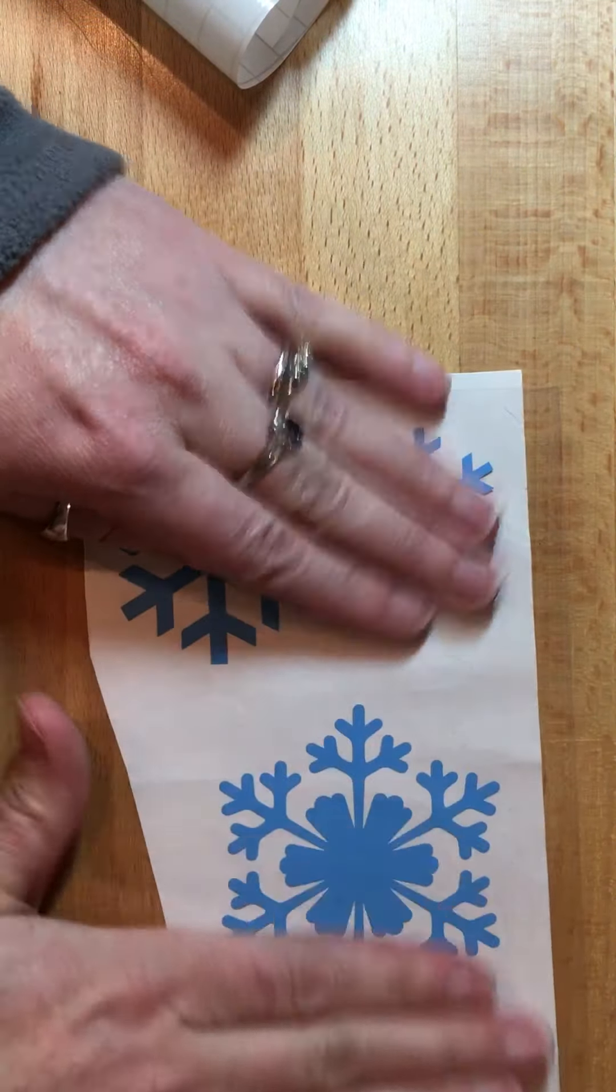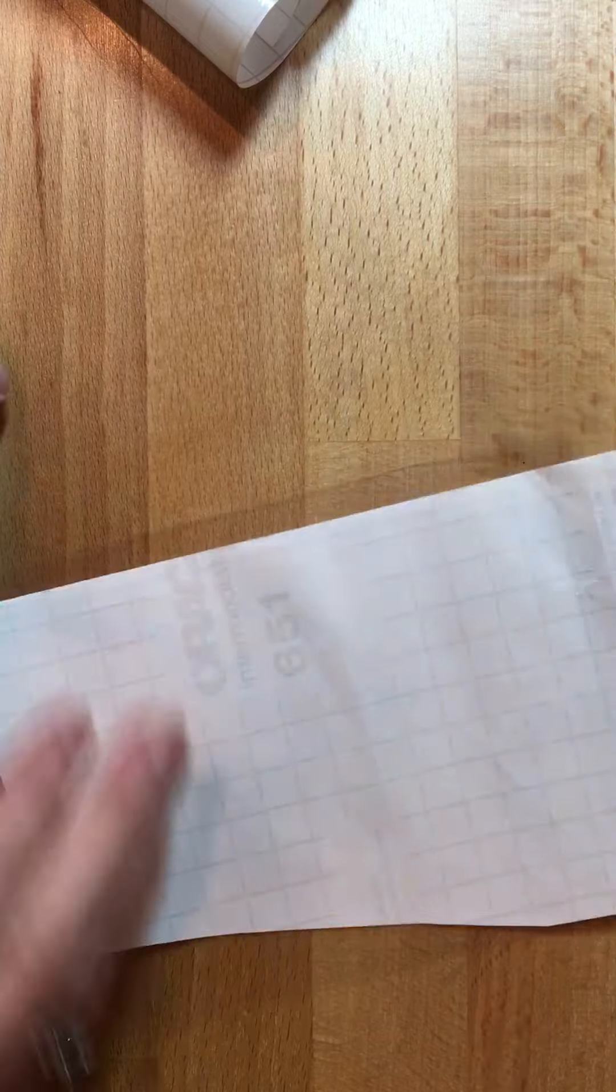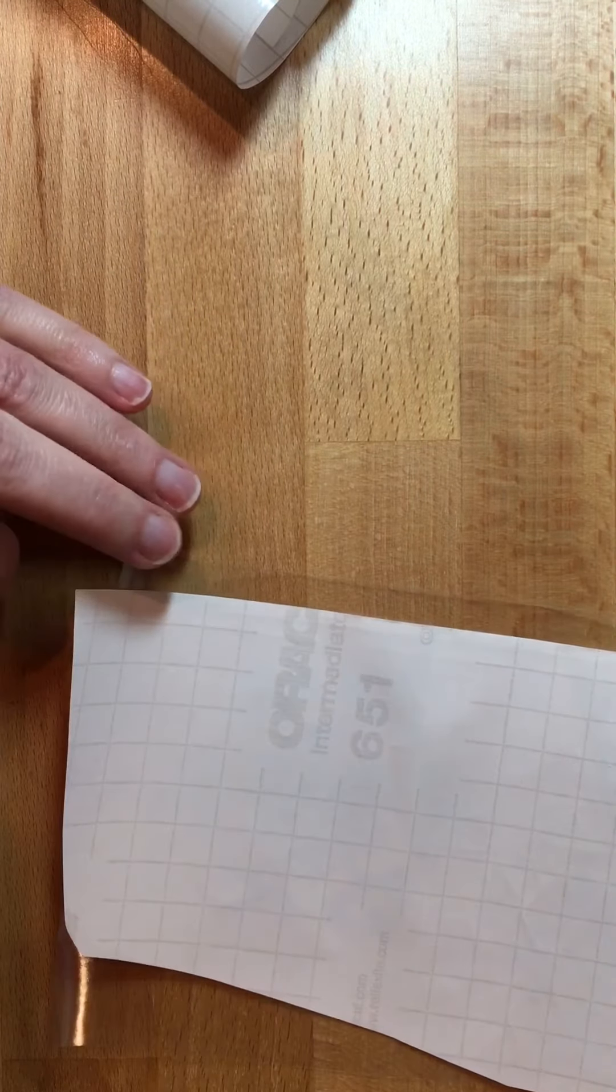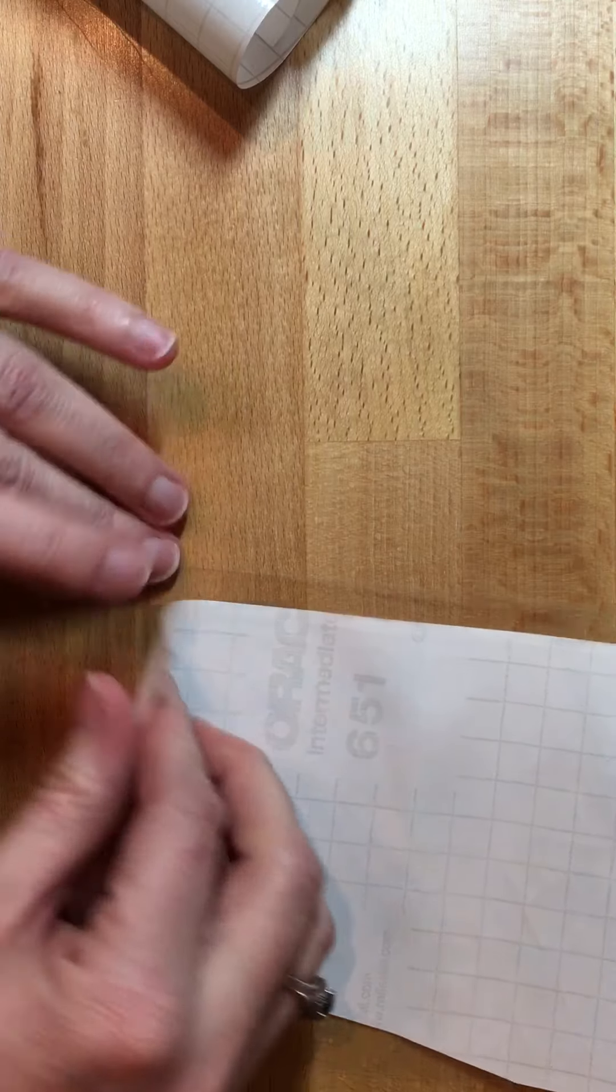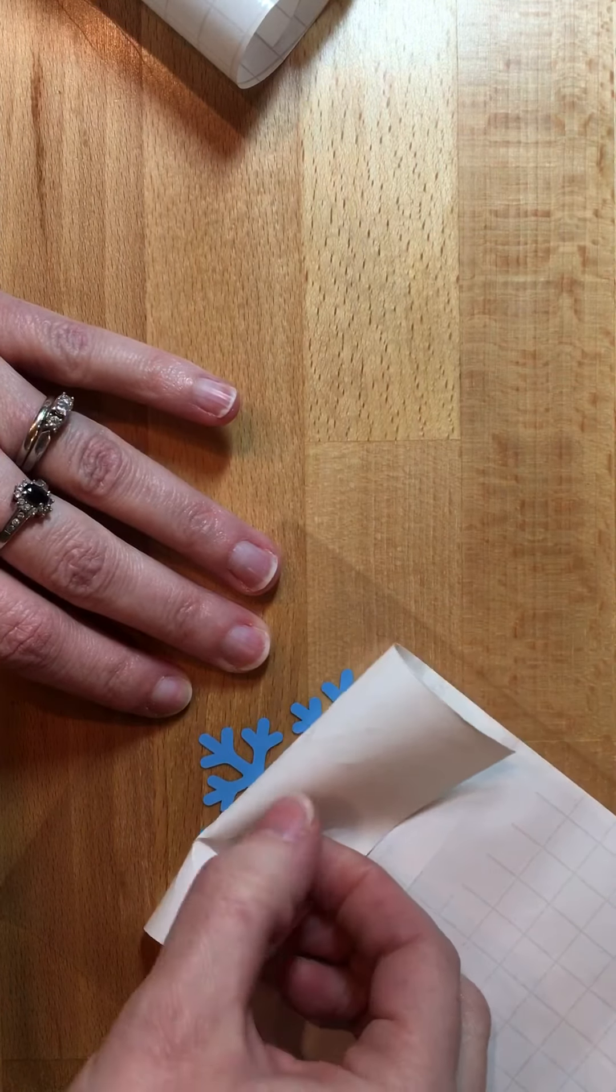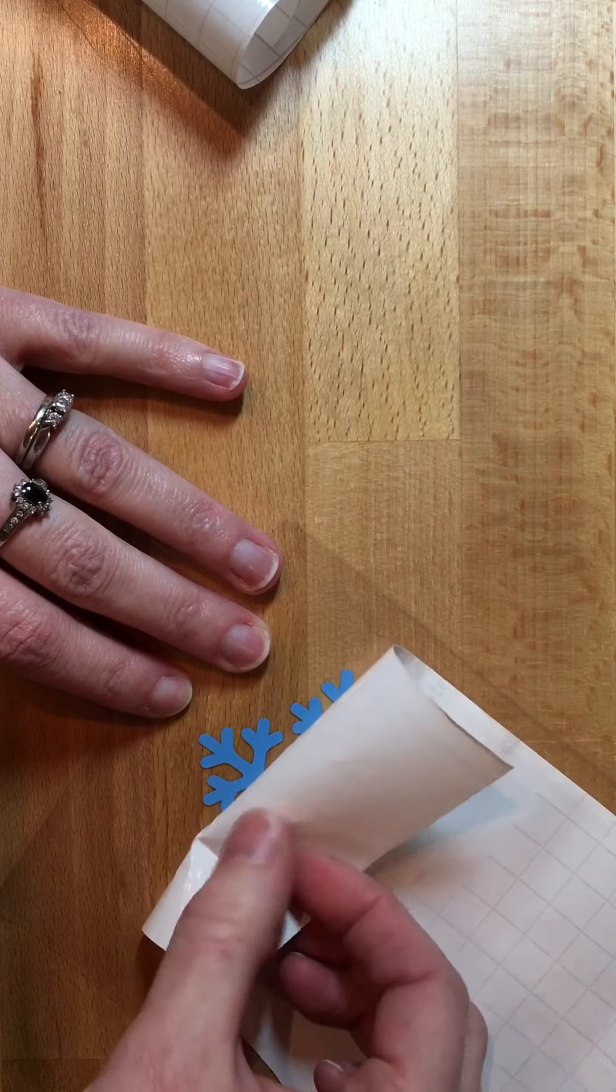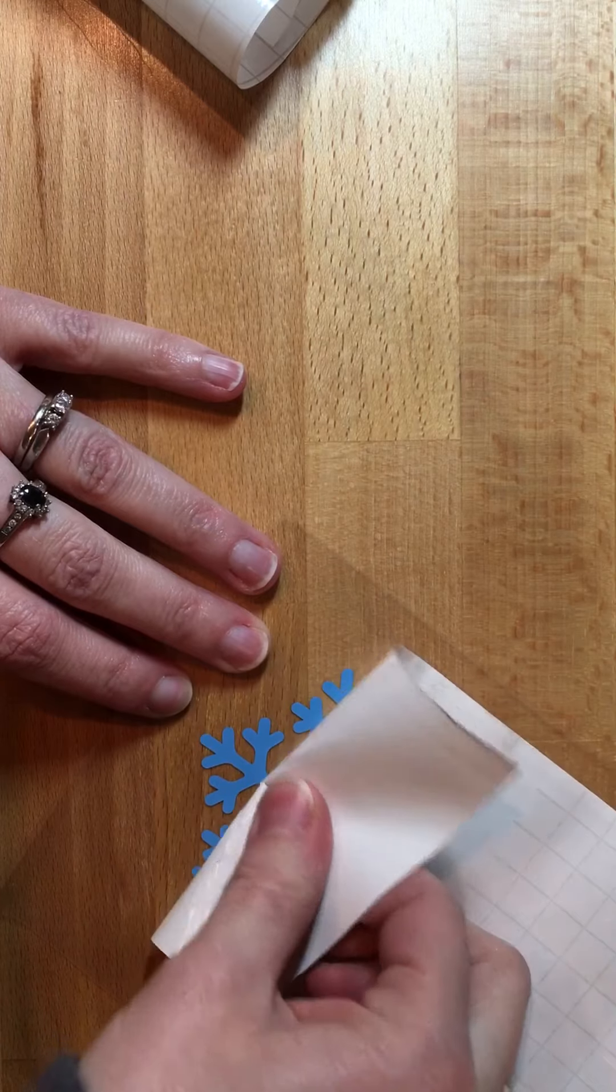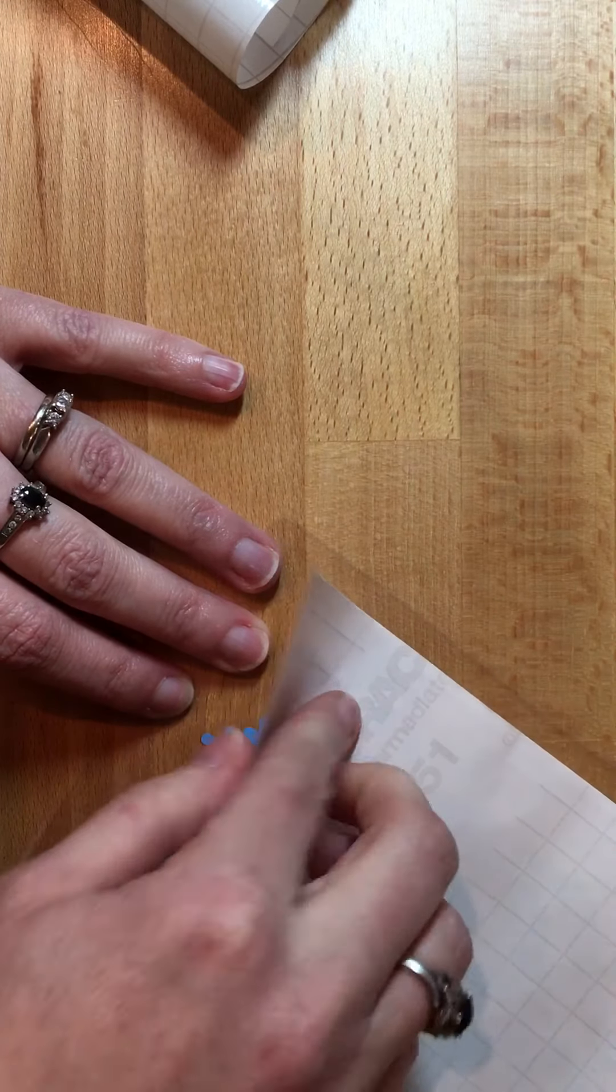If it doesn't stick - now my design stuck pretty good so I didn't have to push it back down - but if as I'm rolling it I see that a piece is still stuck to my backing, then I will just push it back down and peel it at the angle again.